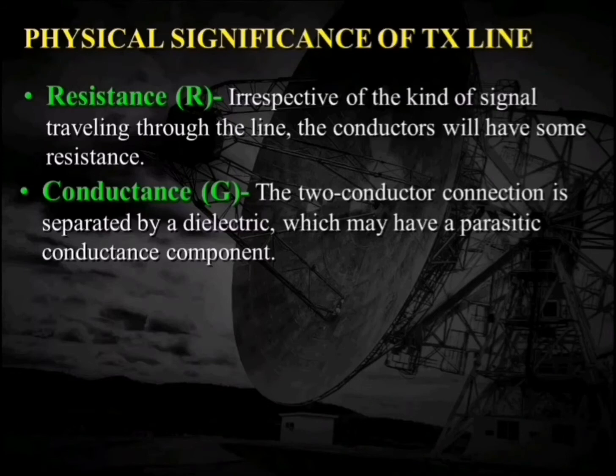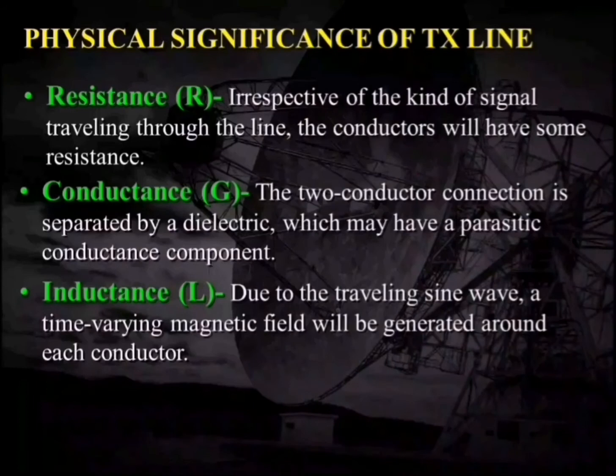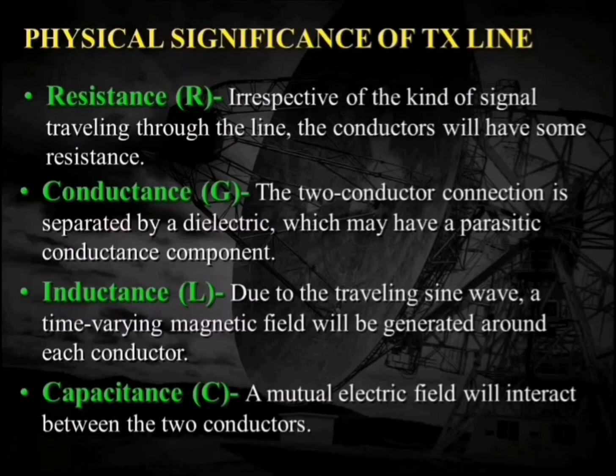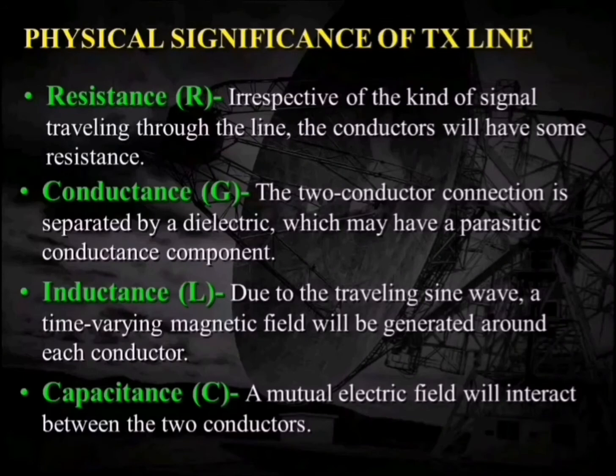Third is the inductance. Due to the current flow, magnetic fields are generated and stored in the conductors. To accommodate this magnetic energy, inductance L is taken into account. The last one is capacitance — whenever there is a magnetic field, there will also be an electric field, and in the form of electric field the electric energy will be stored. To accommodate for that electric energy, capacitance C is taken into action. These four are also called the primary constants of the transmission line.